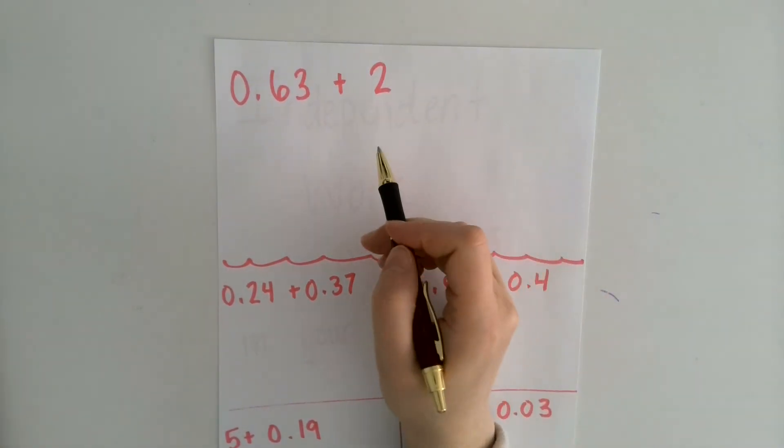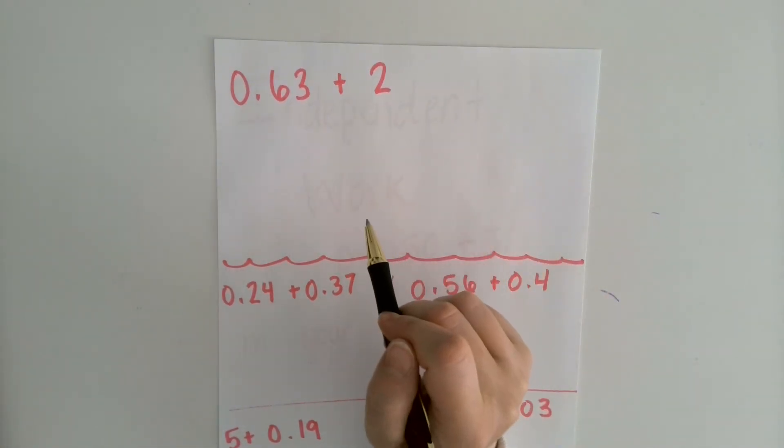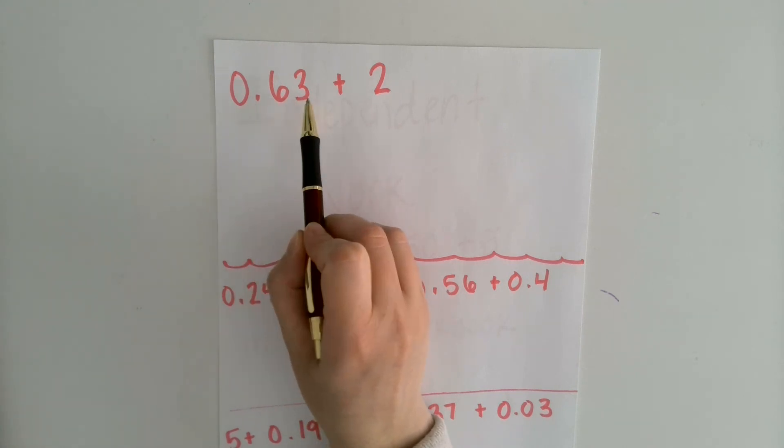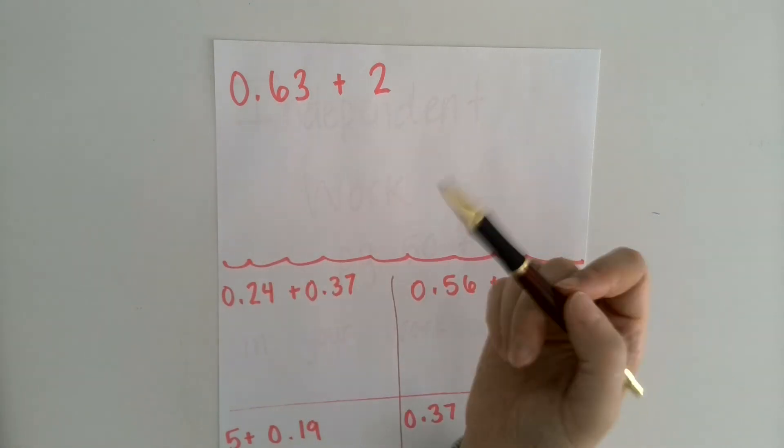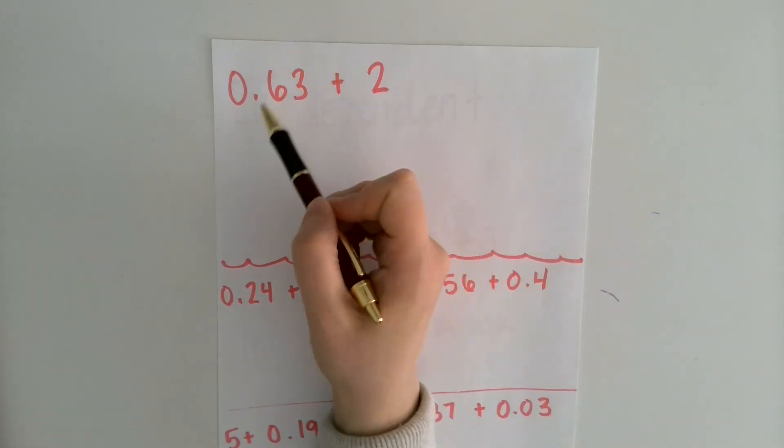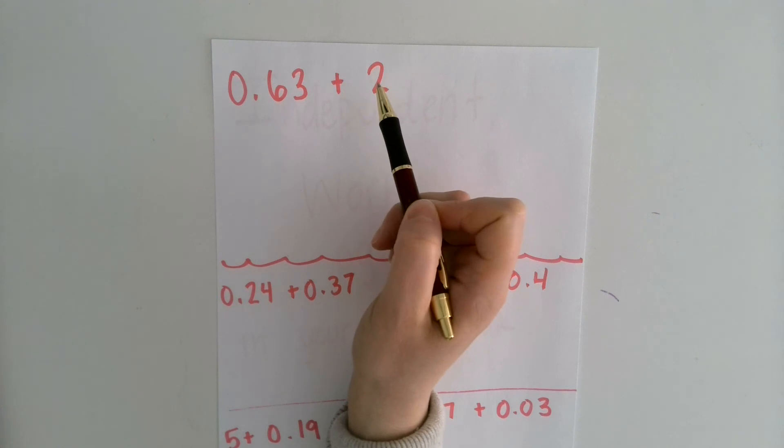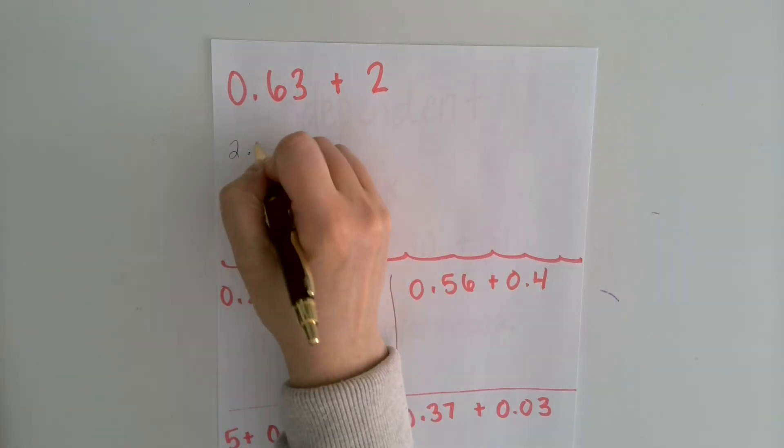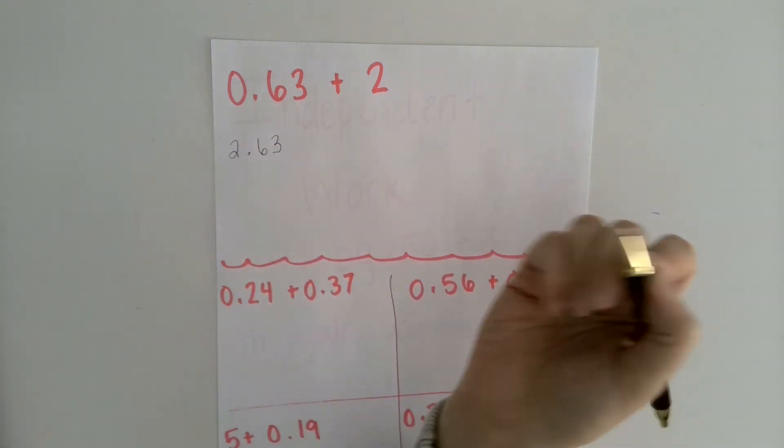Now this is a slightly different problem. And there are a couple different ways you could think about this. Here I have 0.63 or 63 hundredths plus two wholes. Now some of you might just be able to do this mentally. You might be able to say, okay, well, here I have zero wholes. I'm adding two wholes to zero. So my answer would be 2.63. And that is the right answer.